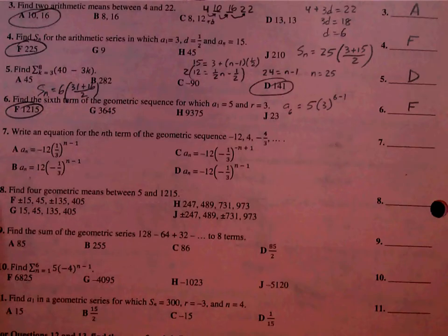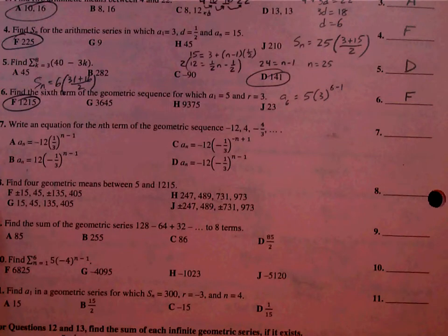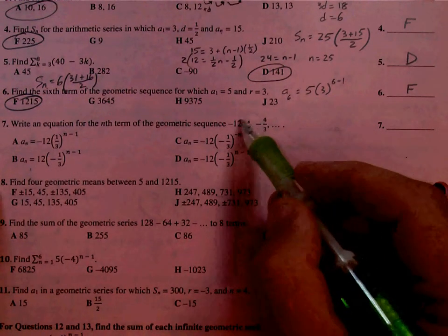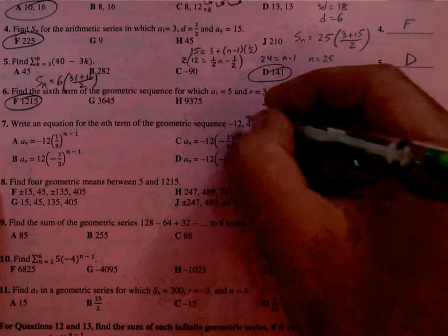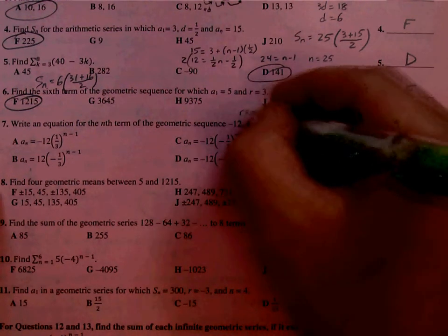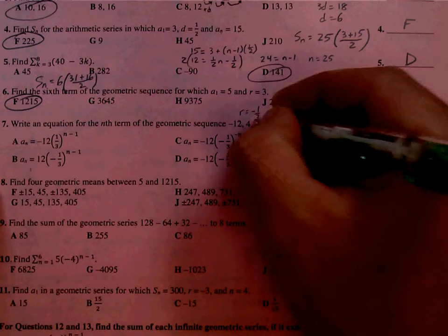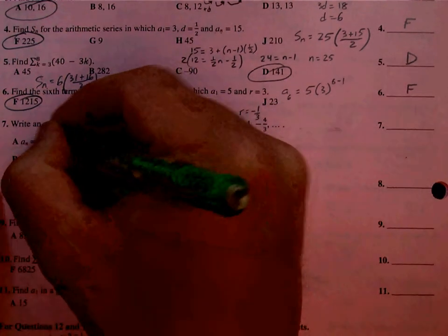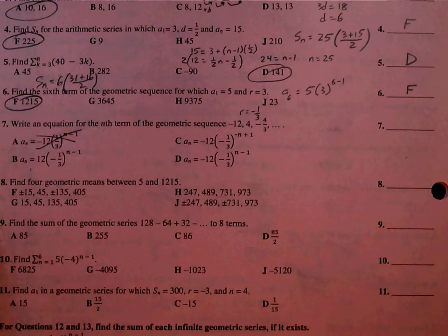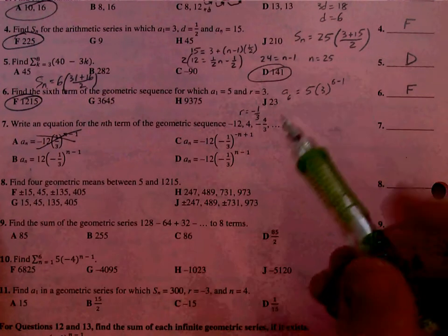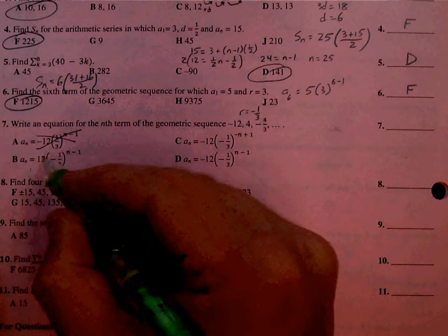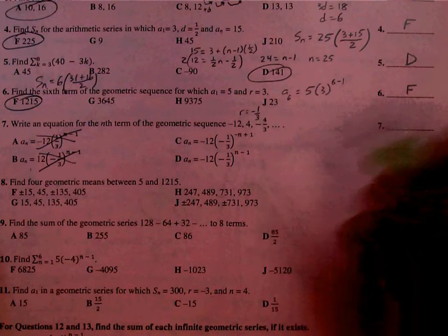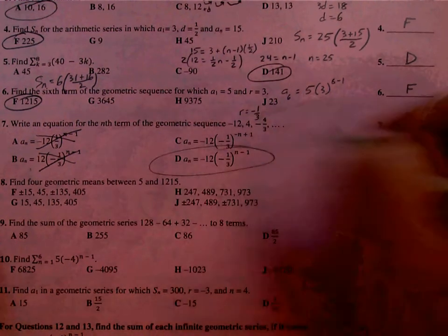Number 7, we've got to write the equation. We see the first term is negative 12. What are we multiplying by? It looks like I'm dividing by 3, so that's the same as 1 third. But I'm also alternating signs, so it's a negative 1 third that I'm multiplying by. Right away, we can throw out A because that was a positive 1 third. We have a first term of negative 12, not positive 12, so we can throw out B. And then you look at your exponents. N minus 1 is what we're looking for, so D.